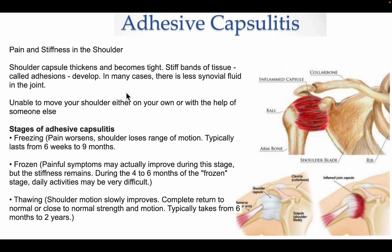Adhesive capsulitis, also known as frozen shoulder, presents with pain and stiffness in the shoulder joint. The shoulder capsule thickens and becomes tight, and stiff bands of tissue called adhesions develop. In many cases there is less synovial fluid in the joint, and the patient is unable to move the shoulder independently or with assistance. The three stages are: freezing — pain worsens day by day and range of motion decreases, lasting 6 weeks to 9 months; frozen — pain may improve but stiffness remains, and daily activities are difficult for 4 to 6 months; thawing — shoulder motion slowly improves and returns to normal or near-normal strength and motion, typically taking 6 months to 2 years.